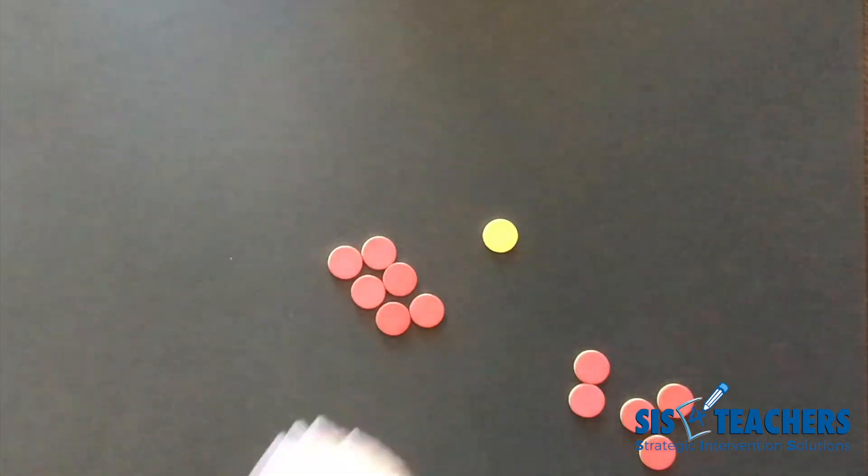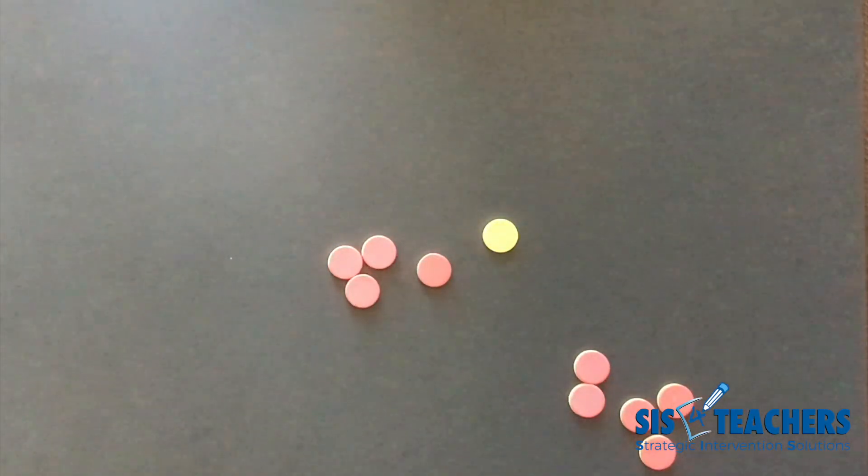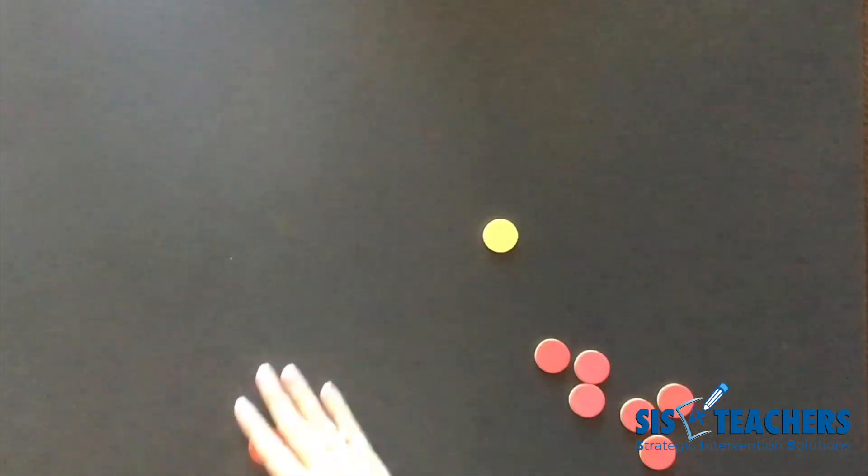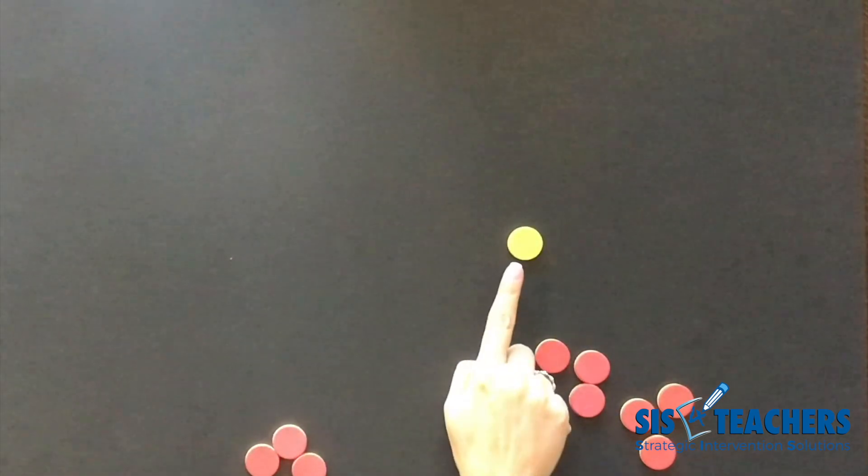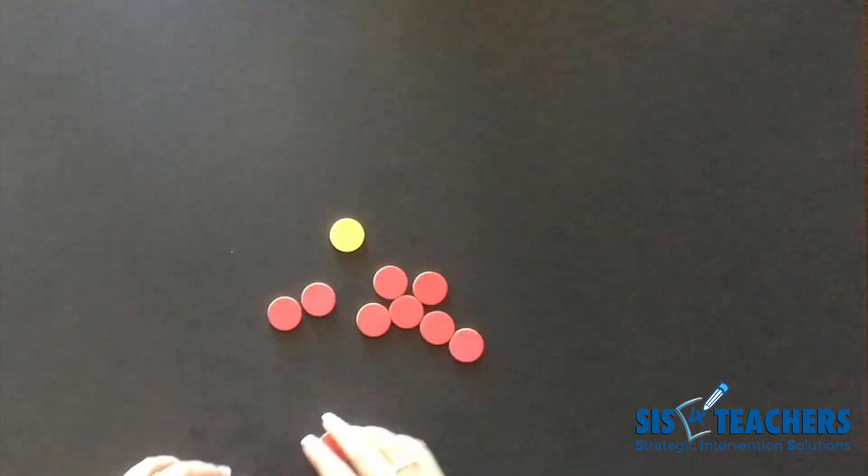As you start to look at the counters, kids might come up with different strategies that might help them decide if they're going to win. In this case, my partner has lost because on her pull, she's stuck with the rotten apple. We're going to reset the game and play again.